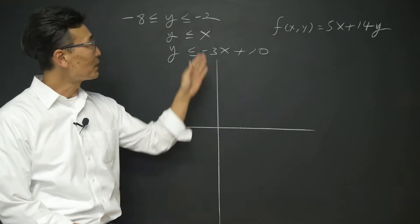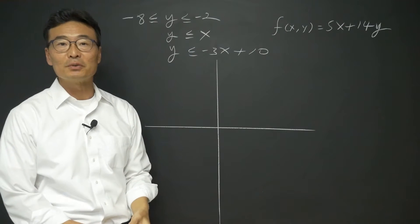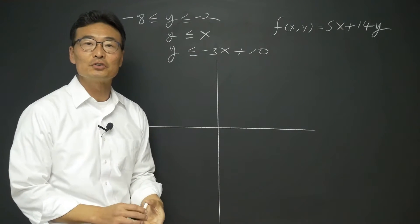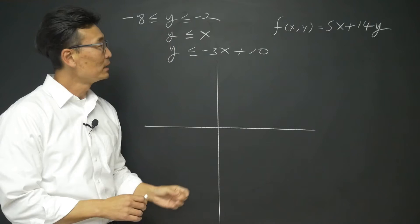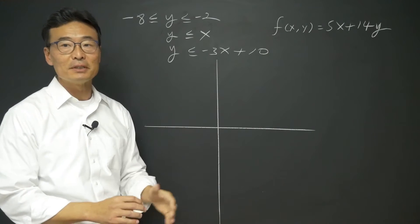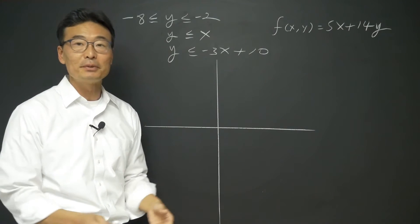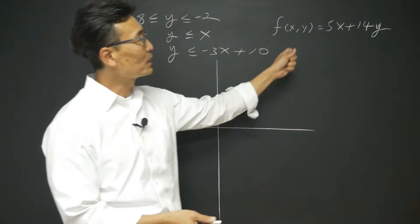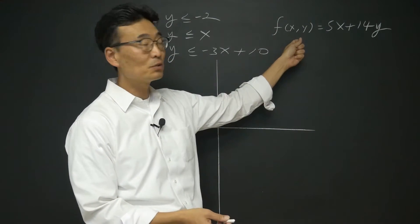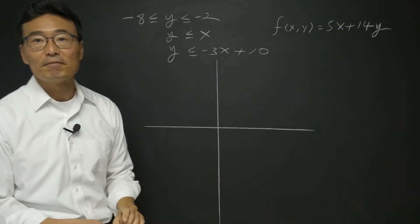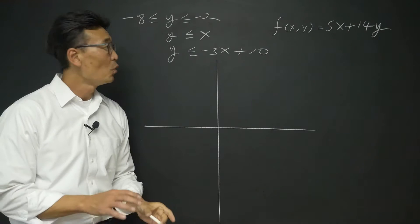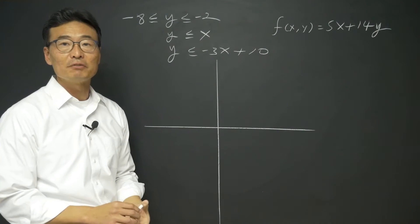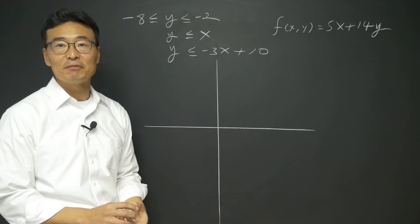If I graph these three inequalities, we're going to get a shaded region and we're going to take the intersecting points — it may be 2, 3, 4, or 5. We're going to take those points and plug them into this function to find which coordinates give us the maximum and the minimum value.